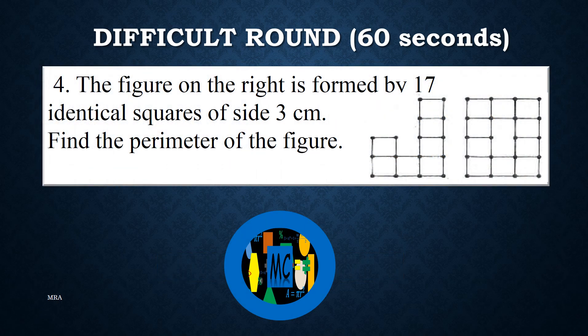Problem 4: The figure on the right is formed by 17 identical squares of side 3 centimeters. Find the perimeter of the figure.